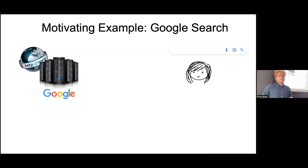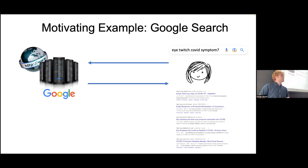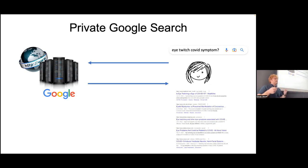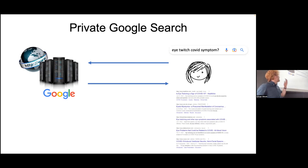Our motivating example is: say you want to search something on Google. We have Alice here who is trying to make some Google search query — say it's some private query she wants to make about some medical condition, for instance. She forms a normal Google search query and expects to get normal Google results. But the question is, can she do this in a way that she doesn't want to reveal the private medical condition she's searching? She wants no one to be able to read what her query is.